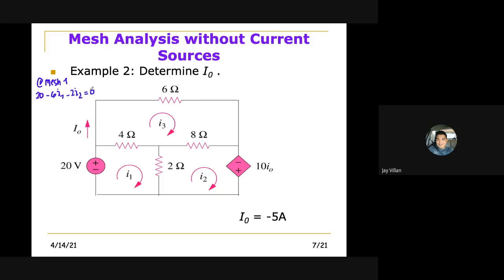That becomes 6I1 plus 2I2 is equal to 20. So that is our equation 1.